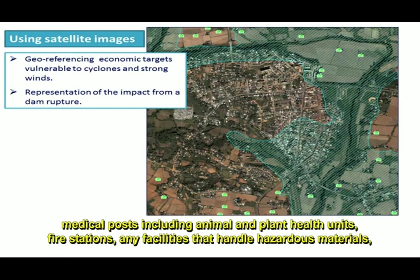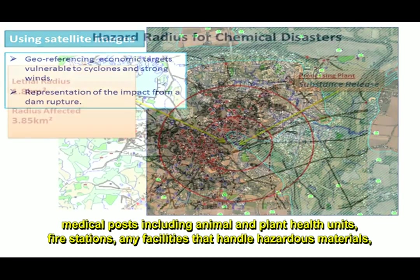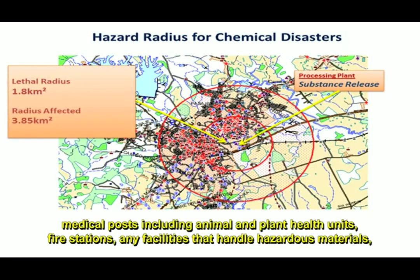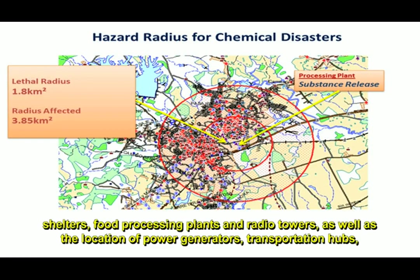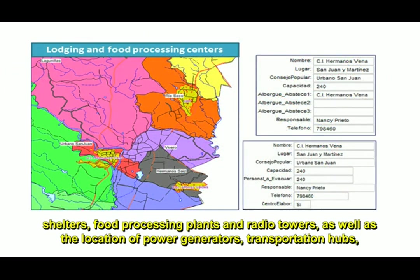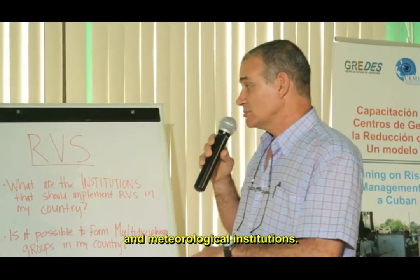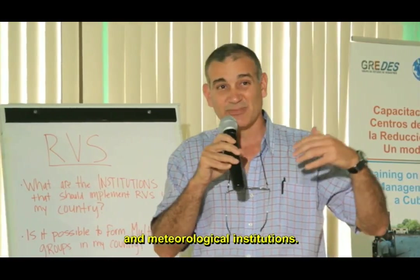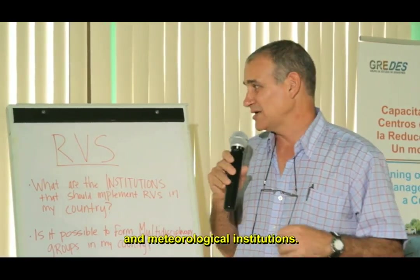We also map fire station commands, entities that handle dangerous substances, shelters and food preparation centers for when personnel must be evacuated, radio operators, the location of power plants, transportation bases, meteorological stations, and radar.